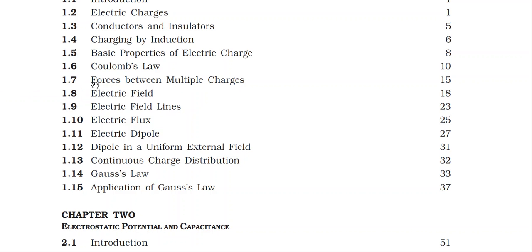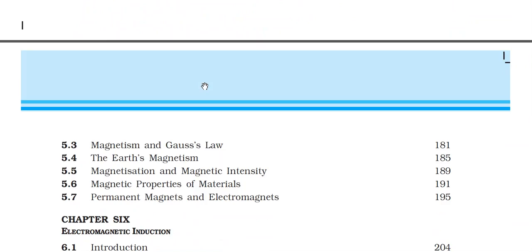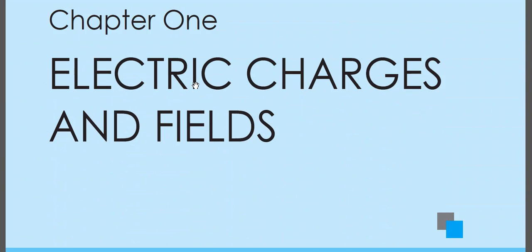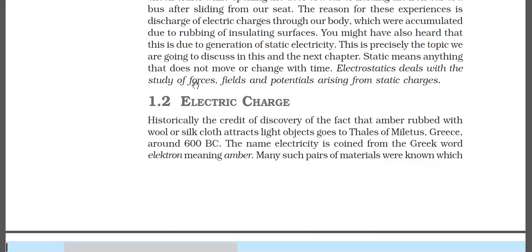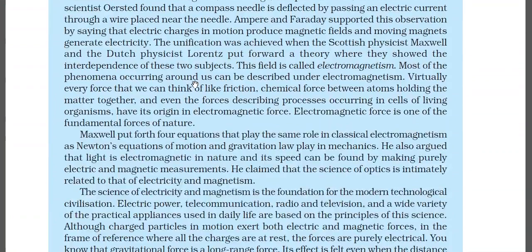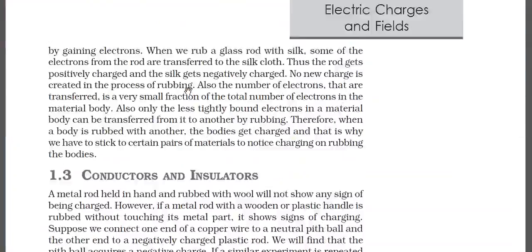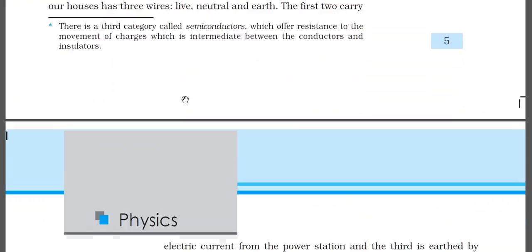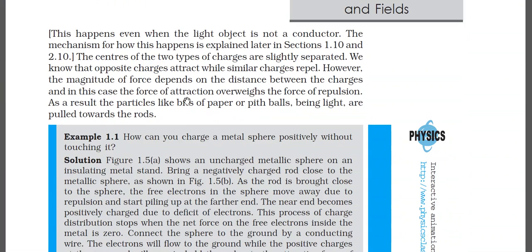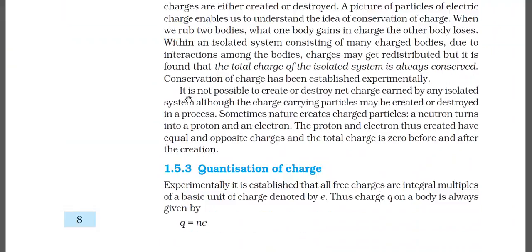This is the 7th section of the first chapter. Till now we had discussed what is charge, what is the meaning of charged bodies and neutral bodies, how to test whether a body is charged or uncharged using the gold leaf electroscope, charging by induction, unification of electricity and magnetism, properties of charges like additivity, conservation of charge for an isolated system, and quantization of charge. We also classified matter into conductors, insulators, and semiconductors, and solved a few examples based on these concepts.